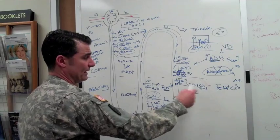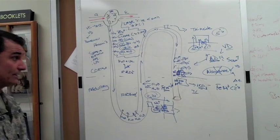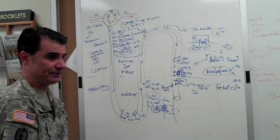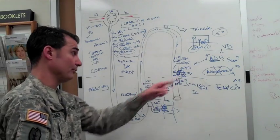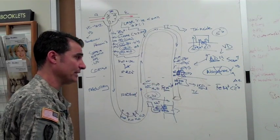and then these two, the aldosterone which is spironolactone works by stopping the ENAC channel. Triamterene and amiloride blocks the actual ENAC channel itself.